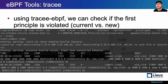If Tracee eBPF is executed with the tracee-event equals commit_creds option, only related events are output. Tracee eBPF also provides functions for tracing various events and acquiring artifacts. Therefore, using Tracee eBPF properly can provide a wealth of information. The list of events provided by Tracee eBPF can be checked with the list option.